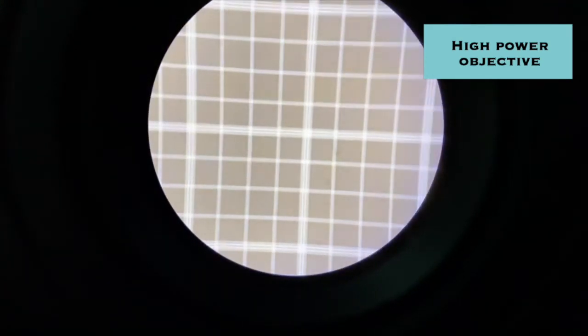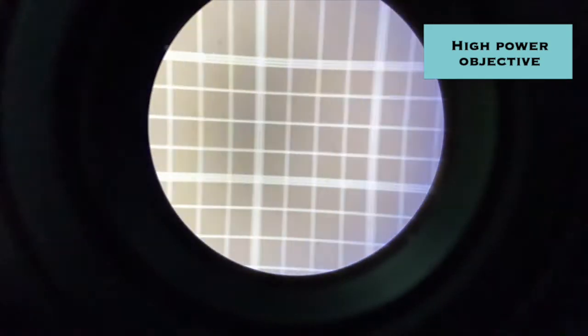Now switching to the high power objective, you can see each of the 25 intermediate squares of the central large square.